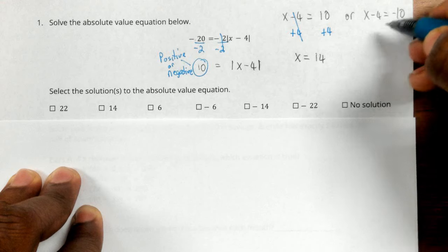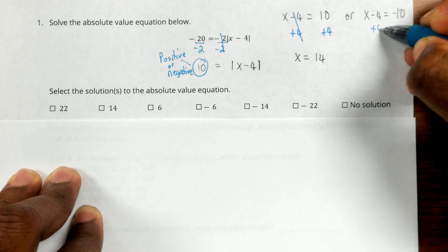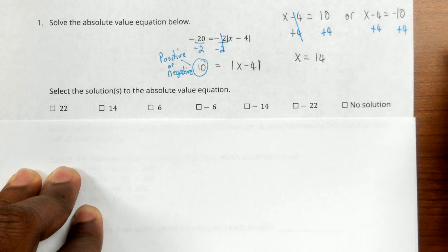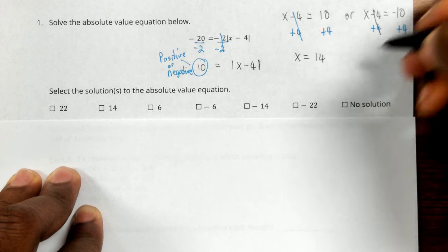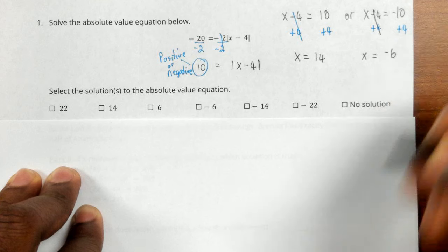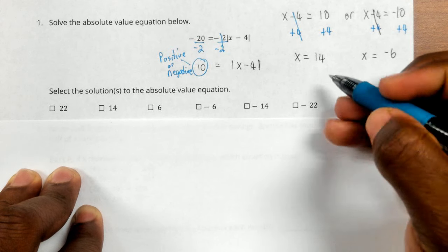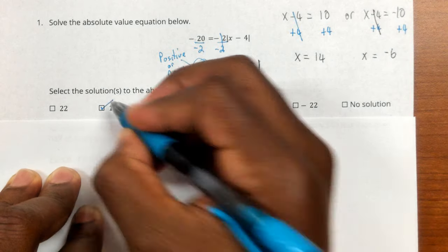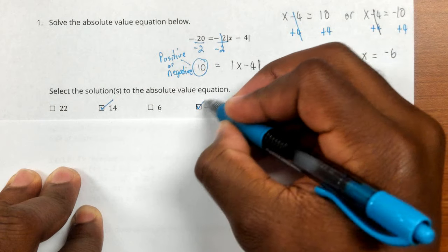So to get the next x value, we would again add 4. These get cancelled, and x would be equal to negative 10 plus 4 is negative 6. So my two x values would be positive 14 and negative 6.